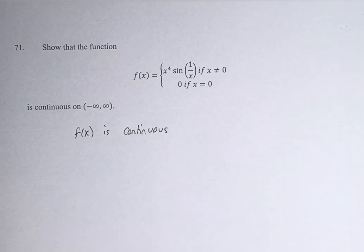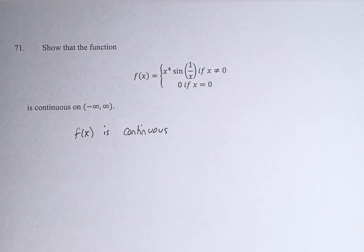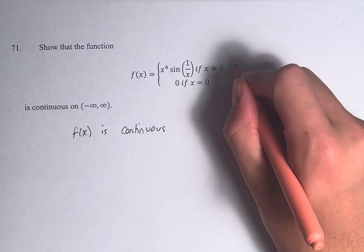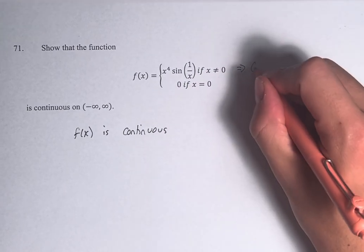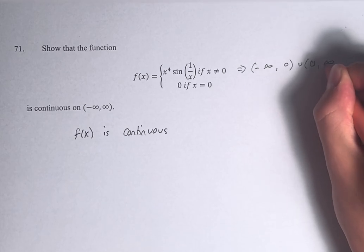And we have to note that that is an open domain, not a closed domain, because f is defined over all real numbers. But we can say it's continuous if x is not equal to 0. So this is the interval from negative infinity to 0, not inclusive, and from 0 to infinity.